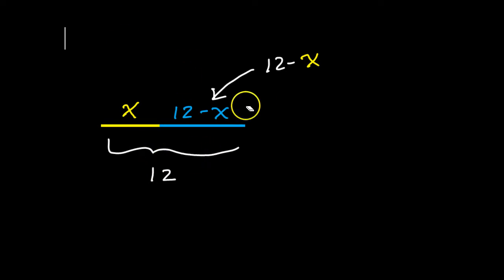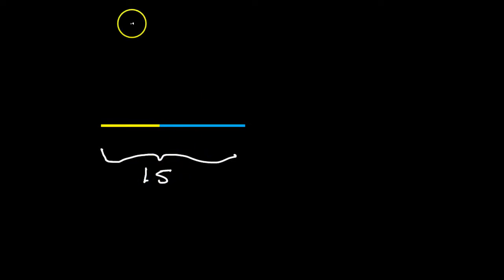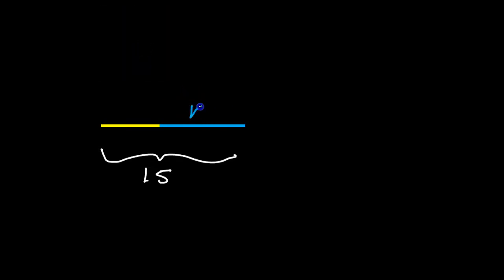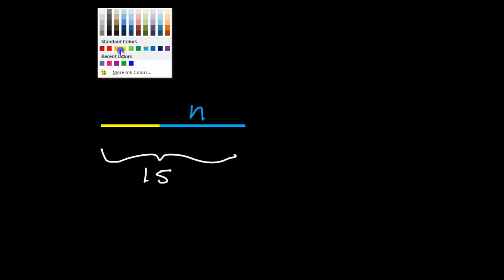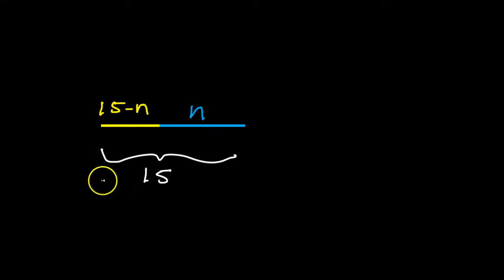Let's practice that, because this shows up very often in many types of problems. When you have a part and a whole, I want you to be able to do this automatically. Let's say the whole thing is 15. What if this part over here is n? Can you give me an expression for the other part? It'll be 15 minus n — the whole minus the other part.